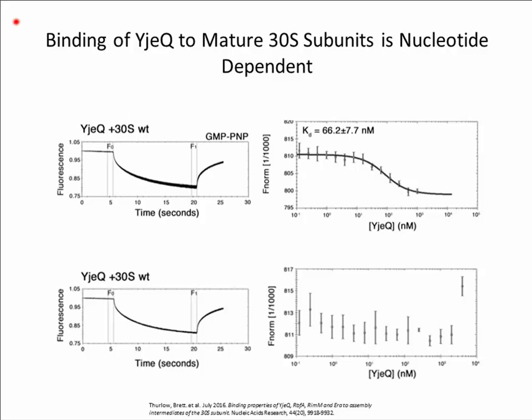Shown here are the MST results of YJQ binding to mature 30S subunits. Consistent with previous literature, in the presence of the non-hydrolyzable GTP analog GMPPNP, YJQ was shown to have a high affinity in the low nanomolar range towards mature 30S subunits. When we removed GMPPNP and used GDP instead, there was no binding, which was consistent with what we expected from previous data and literature. This was a great result because it confirmed numerous previous experiments and quickly demonstrated the potential that MST had for clarifying our ribosome-protein interactions.